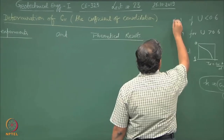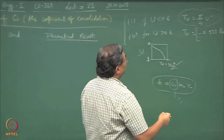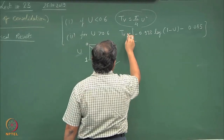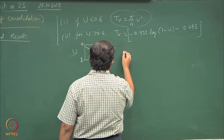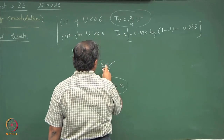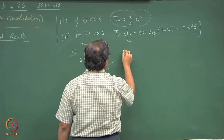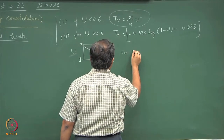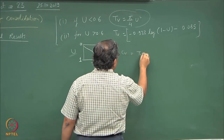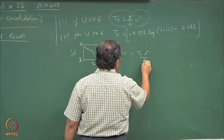What we observe is that degree of consolidation depends upon the time factor Tv, and Tv is linked with the coefficient of consolidation. So we can say that cv equals Tv times d-squared upon T.